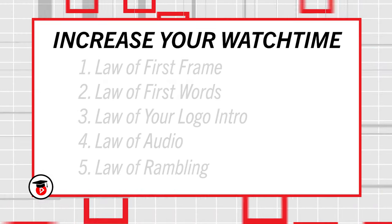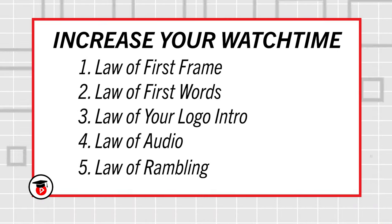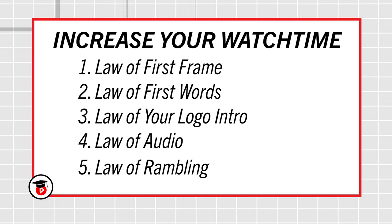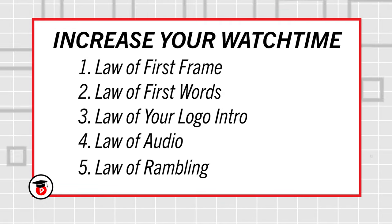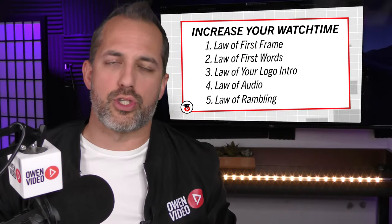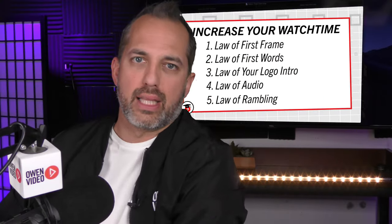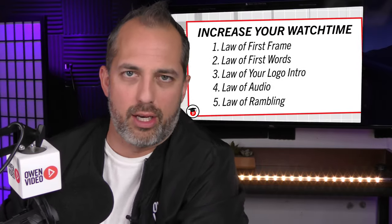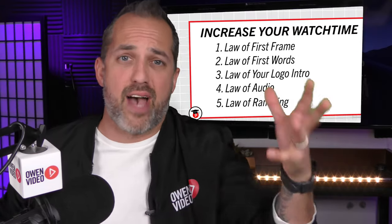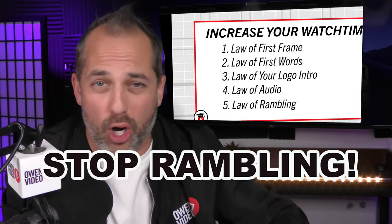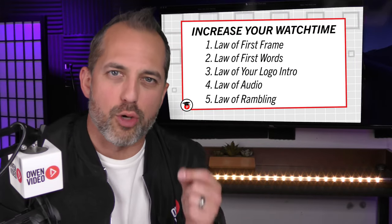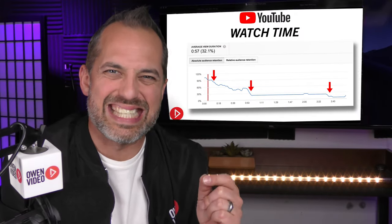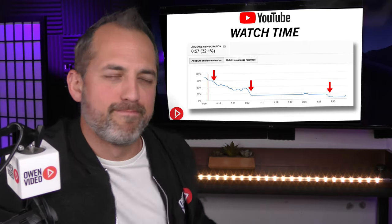That brings us to number five, the law of rambling. You might've kept them for the first 10 seconds, but if you're talking too much or taking too long to get to the point, they're going to log off 20 or 30 seconds later. This can be an issue for YouTubers like me that like to ramble on and on about stuff. The fact of the matter is — and that's why you want to make sure your message is as short and concise as possible.